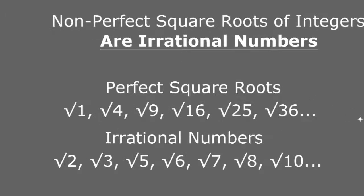As a matter of fact, all square roots of integers that are not perfect squares are irrational numbers. If we take the numbers 1 through 6 and square them, we get 1, 4, 9, 16, 25, and 36. All of the square roots of integers that fall between these perfect squares — for example, the square root of 2 and the square root of 3 between 1 and 4, and similarly between 4 and 9, between 9 and 16, and so on — are always irrational numbers.